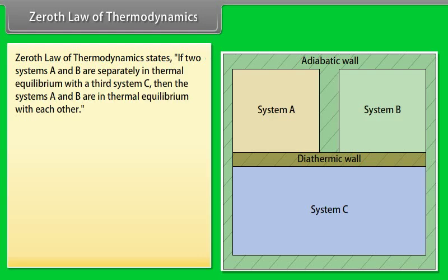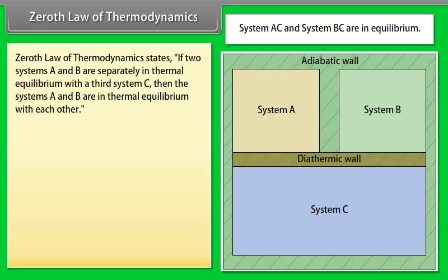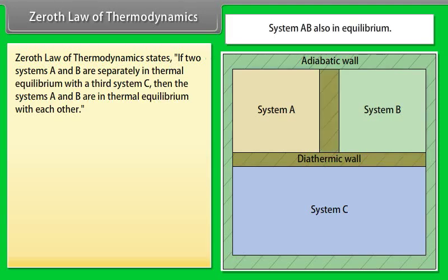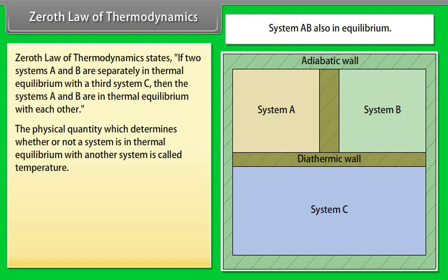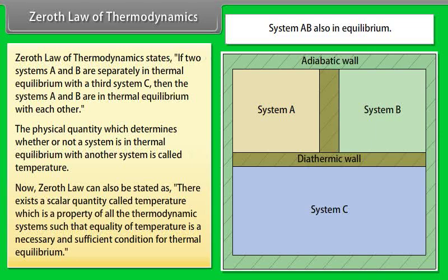Zeroth Law of Thermodynamics states: if two systems A and B are separately in thermal equilibrium with a third system C, then systems A and B are in thermal equilibrium with each other. The physical quantity which determines whether a system is in thermal equilibrium with another system is called temperature. Zeroth's law can also be stated as: there exists a scalar quantity called temperature, a property of all thermodynamic systems, such that equality of temperature is a necessary and sufficient condition for thermal equilibrium.